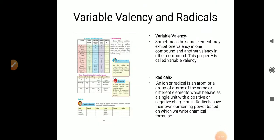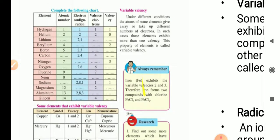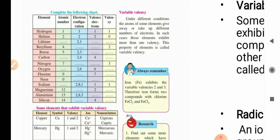Now let me tell you about variable valency. Under different conditions, the atoms of some elements give away or take up different numbers of electrons. In such cases, those elements exhibit more than one valency. This property of elements is called variable valency.